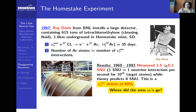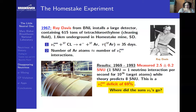He measured 2.5 ± 0.2 solar neutrino units, equivalent to one neutrino interaction per second for 10^36 target atoms. But the theory predicts — since the sun produces electron neutrinos from fusion — 8 solar neutrino units. He measured 2.5 ± 0.2, so there was a deficit of 70%.